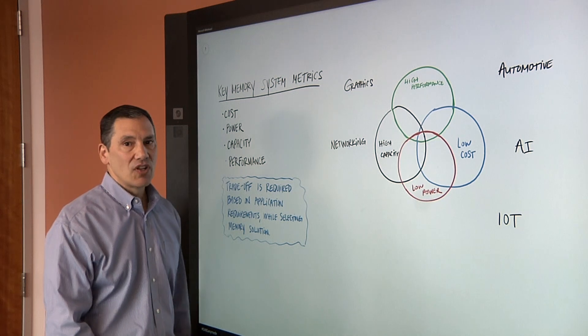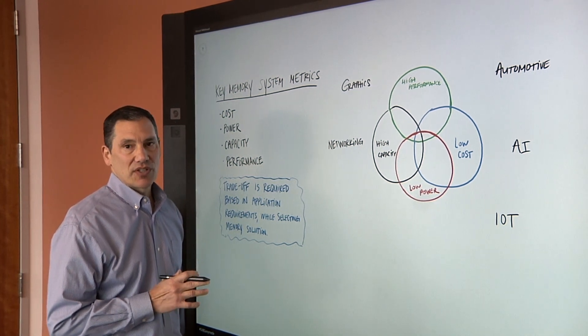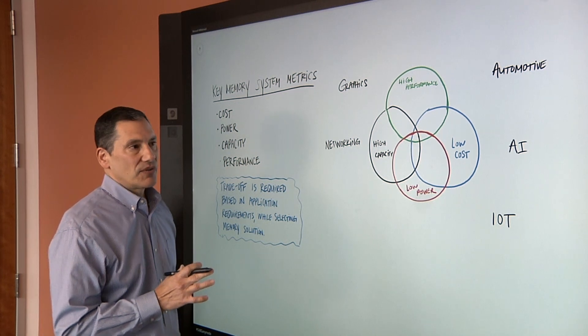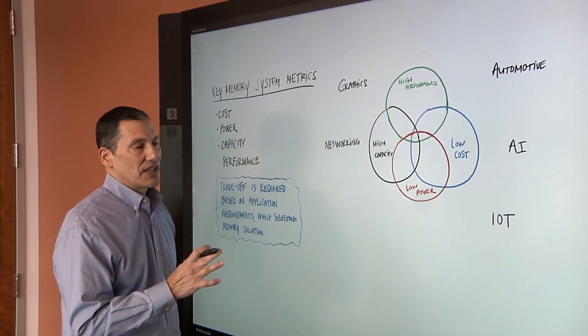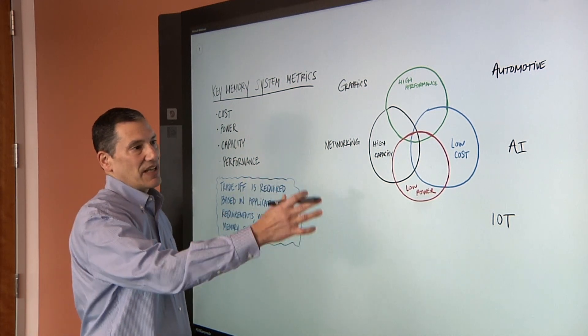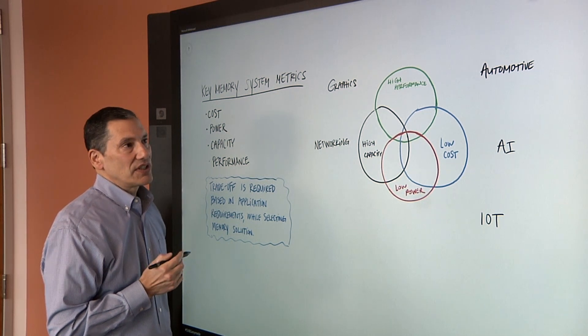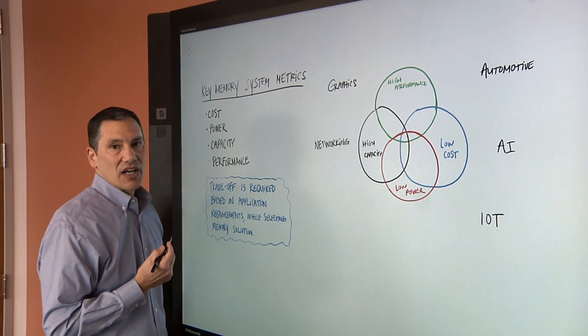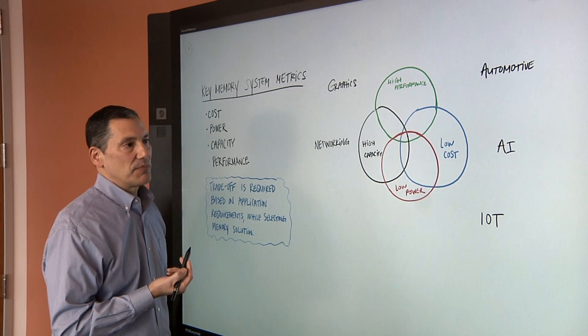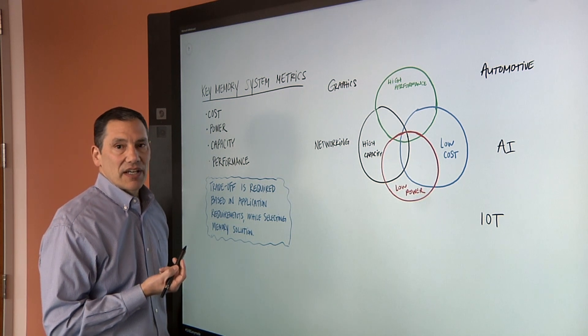So Frank, what are we looking at here? We're looking at the tradeoff that customers have to make when choosing a memory system. There's several different dynamics working sometimes against each other, sometimes together. I've drawn out in circles here the different tradeoffs. Customers are looking at bandwidth and performance, that's a key metric.